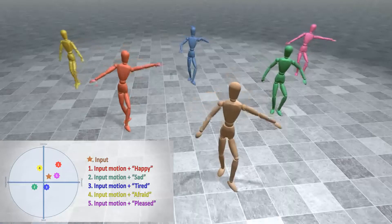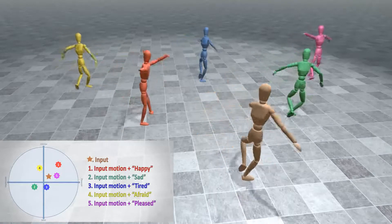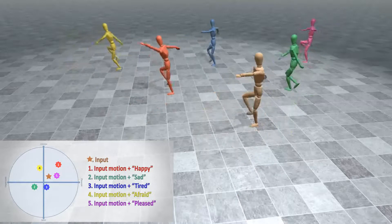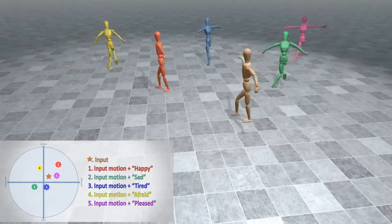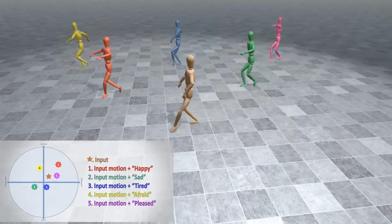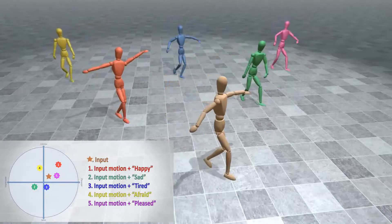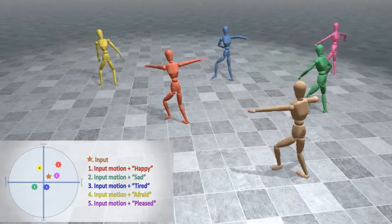We show here a group of characters performing the same dance, each stylized using a different target emotion. Reuse of the same motion capture data to easily stylize multiple characters can find applications in films and games production.